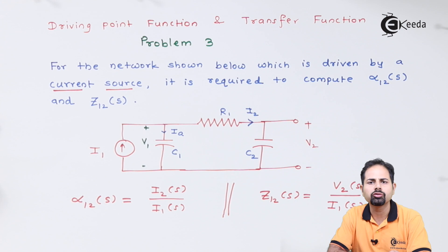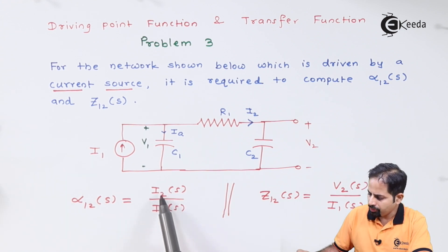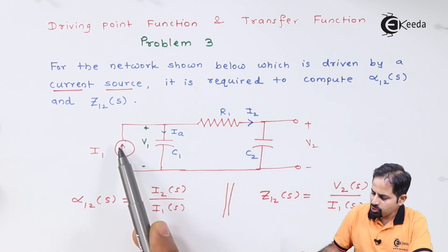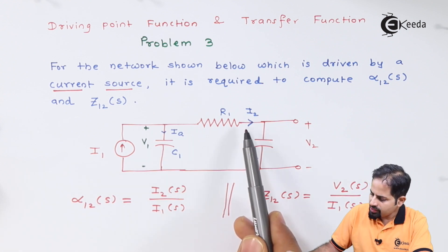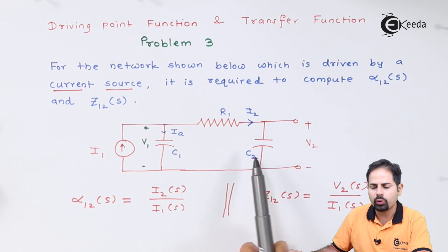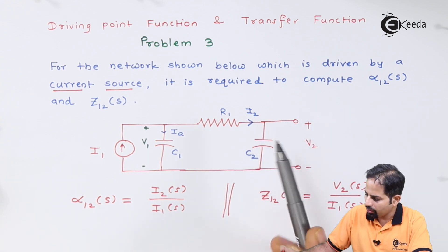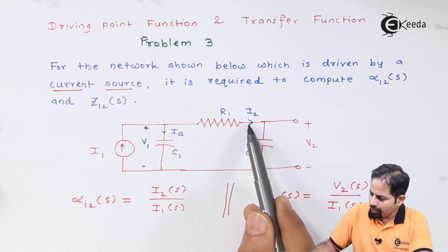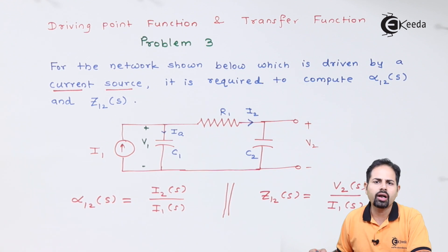We need to find the relation between i2 and i1. The main source of current is i1. There is current through resistance R and also through capacitor C2. Because this branch is open circuit, there is no current there. So for i2 and i1 we can use the current division formula.